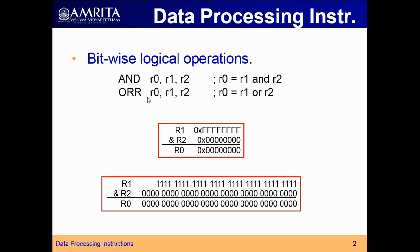Similarly, you can perform bitwise OR — the operation is the same, only the operation changes to R1 OR R2, done bitwise. Then there is EOR, which stands for XOR operation. XOR means: 1 XOR 1 will be 0, and 0 XOR 0 will be 0. So when R1 and R2 have the same number, the result will be 0. Whenever any bit is different — 1 XOR 0 or 0 XOR 1 — you get 1 as the result.